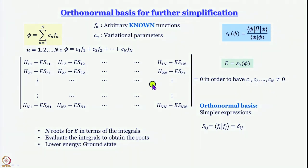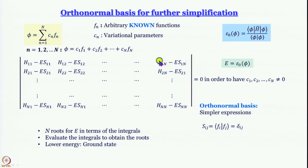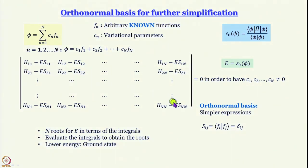What happens to the secular determinant? The S₁₁ term becomes 1, so the diagonal element h₁₁ − E remains. The off-diagonal S₁₂ terms become 0, so those contributions vanish. All diagonal elements become h_{ii} − E and all off-diagonal elements are purely h_{ij}, simplifying the determinant considerably.